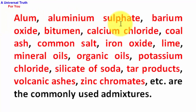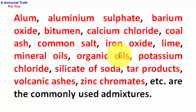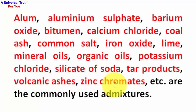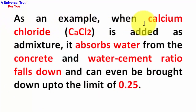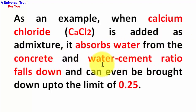Commonly used admixtures include aluminium sulphate, barium oxide, bitumen, calcium chloride, coal ash, common salt, iron oxide, lime, mineral oils, organic oils, potassium chloride, silicate of soda, tar products, volcanic ashes, and zinc chromates. For example, when calcium chloride (CaCl₂) is added as an admixture, it absorbs water from the concrete, causing the water-cement ratio to fall — it can even be brought down to as low as 0.25.